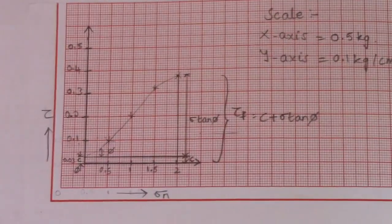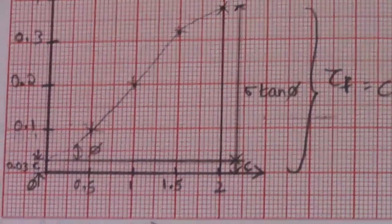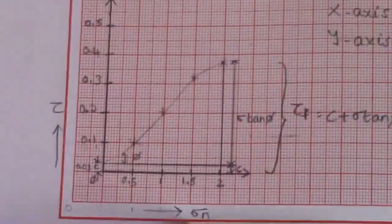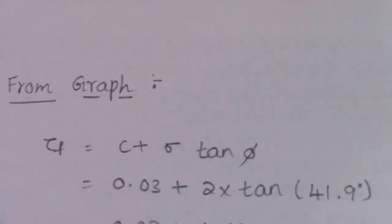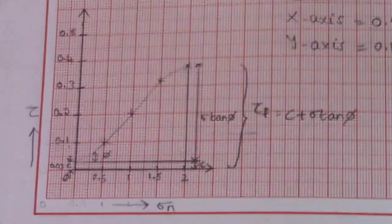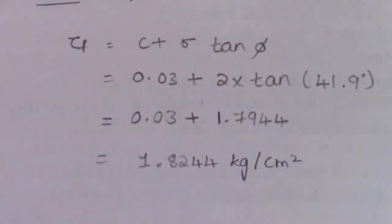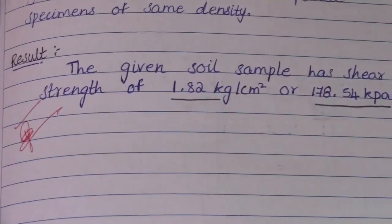We draw a graph between normal stress on the x-axis and shear stress on the y-axis. Plotting the values, we get the intercept C equal to 0.03 kg per centimeter squared, and the phi value is nearly 41.9 degrees, measured using a protractor. Knowing C, phi, and sigma, we substitute all values in C plus sigma into tan phi. We get the shear strength of the soil as 1.82 kg per centimeter squared. We report this value as the shear strength of the soil using DST — direct shear test. Thank you.